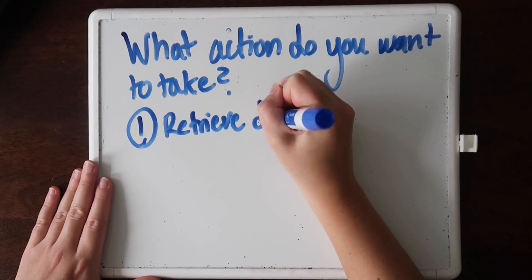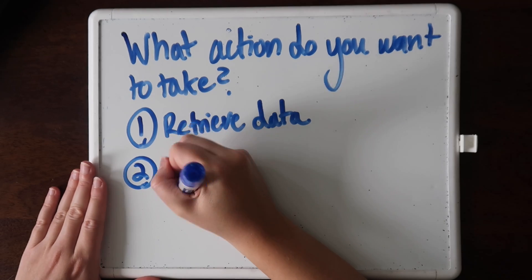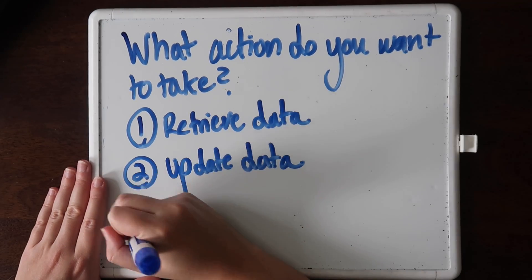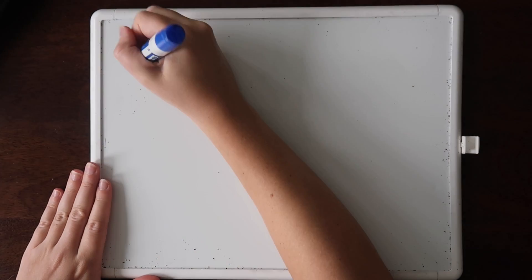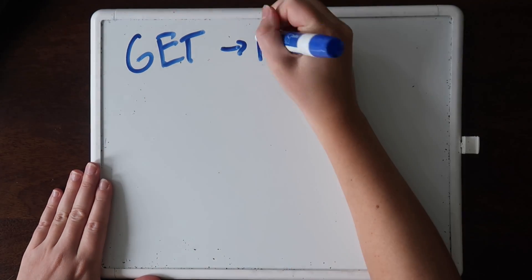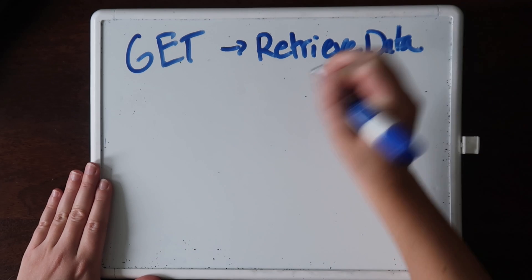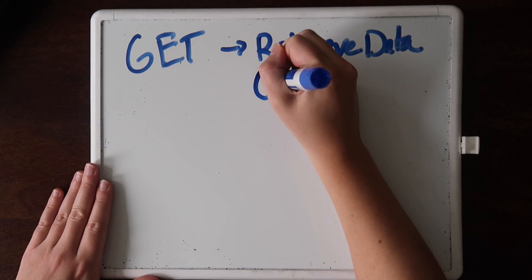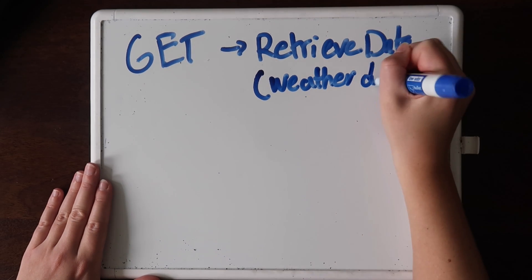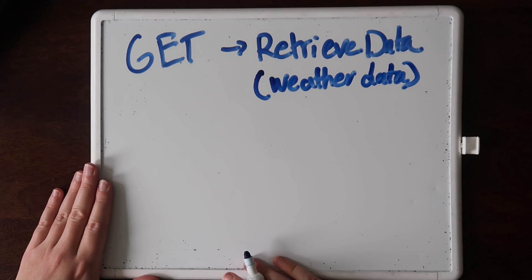When you're communicating with another software service, you need to provide it with what action you want to take. Do you want to retrieve data? Do you want to update data another software service has? HTTP does this through HTTP methods. First, there's GET — the most common — and it's about retrieving data from another software service. For example, one software service might know about the weather, so we could retrieve it using that service's API and use the GET HTTP method.